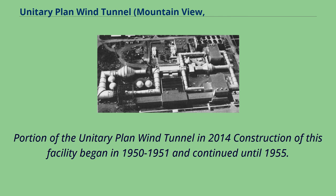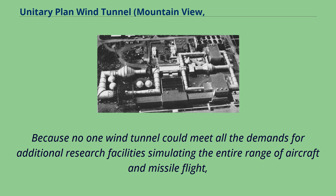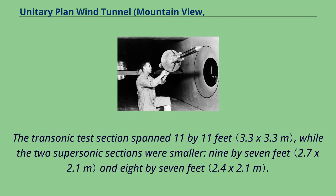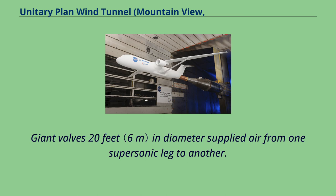Construction of this facility began in 1950–1951 and continued until 1955. Because no single wind tunnel could meet all the demands for research facilities simulating the entire range of aircraft and missile flight, NACA chose to build the Ames Tunnel with three separate test sections drawing power from a common centralized power plant. The transonic test section spanned 11 by 11 feet, while the two supersonic sections were smaller — 9 by 7 feet and 8 by 7 feet. Giant valves 20 feet in diameter supplied air from one supersonic leg to another.